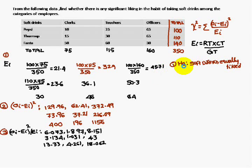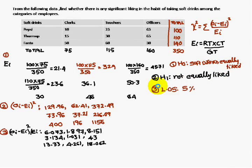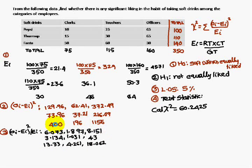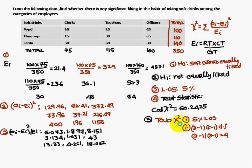Now set up the hypotheses: H0 — soft drinks are equally liked; H1 — soft drinks are not equally liked. The level of significance is always 5%. The test statistic, that is the calculated chi-square, is the sum of all (Oi minus Ea) whole square by Ea values, which gives 60.2425.